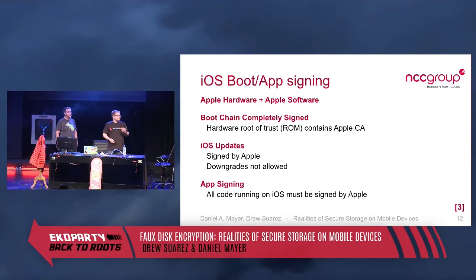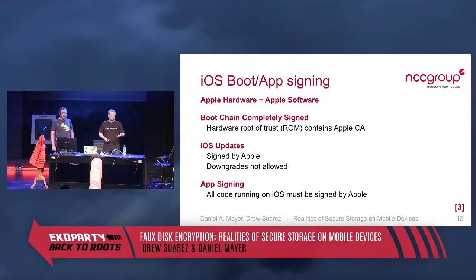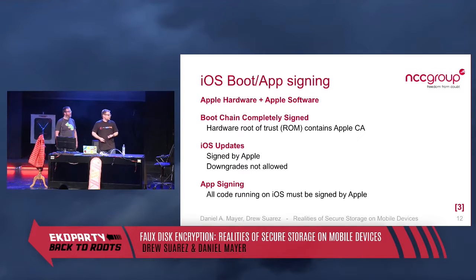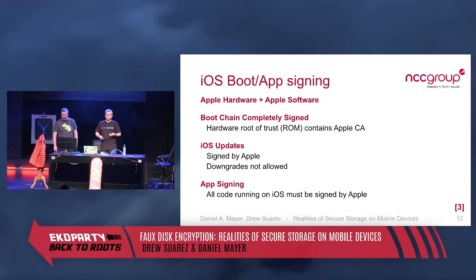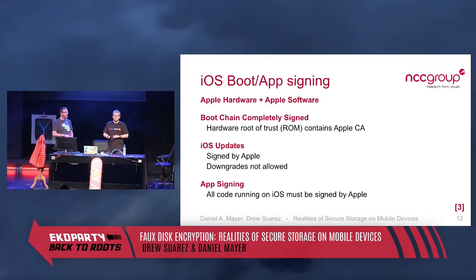There's also a feature that prevents downgrading — which annoys many of us because jailbreaks disappear — but the reason is that if you have a security patch, you can't revert to a less secure OS version. Finally, all apps are signed at the code level. Even if you could write data to the device and try to run it, you couldn't, because you wouldn't have a proper code signature and the processor will refuse to run it.